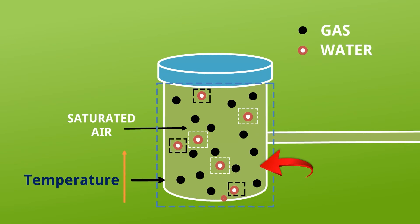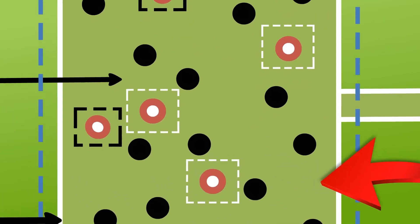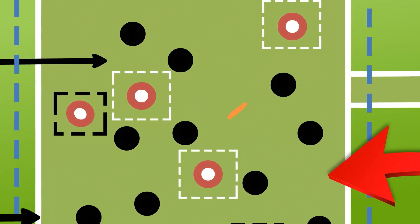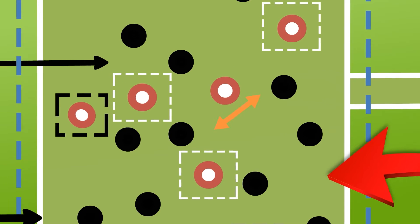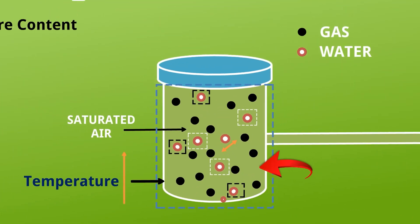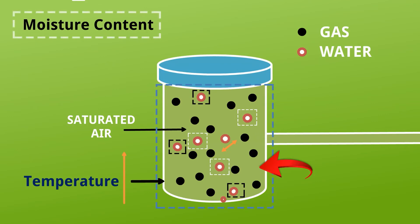Now if we increase the temperature, it increases the gap between the gas molecules, creating more space for moisture. So air has a property to hold moisture content, and here the term relative humidity is introduced.